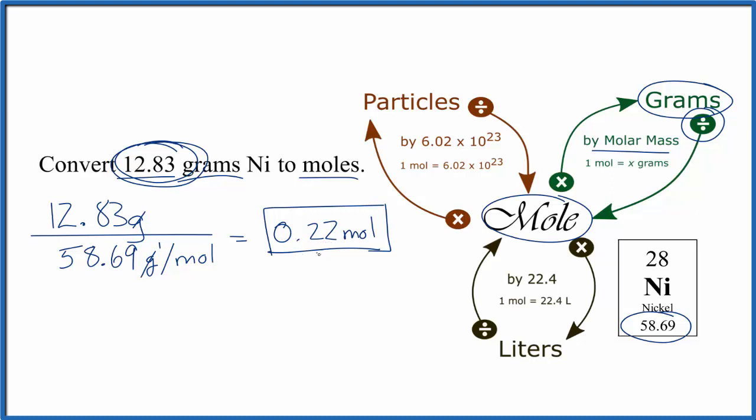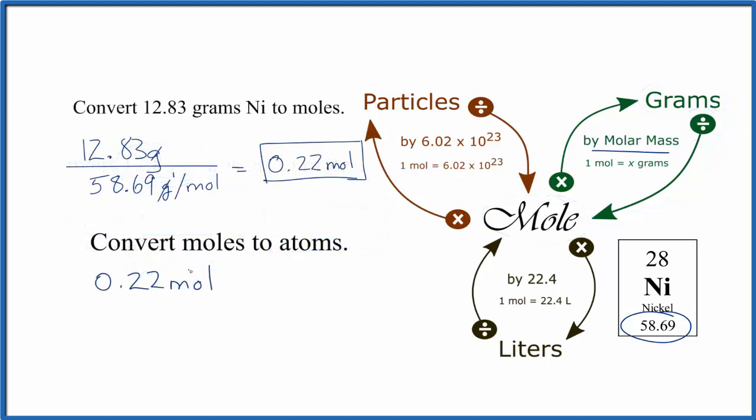Let's convert the moles of nickel now to atoms. So we have 0.22 moles of nickel. That's what we found out when we went from grams to moles. When we're going from moles to particles, particles are things like atoms, molecules, or ions. So we're going from moles to atoms here.